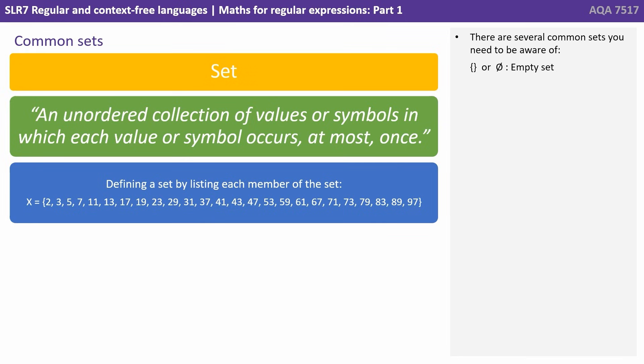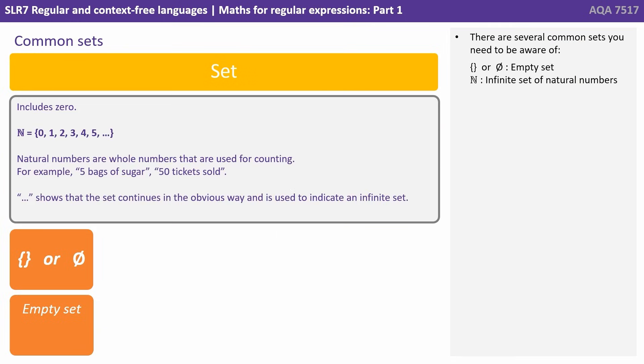There are several common sets you need to be aware of. These are the symbols we use to represent an empty set. This capital letter N is used to represent the infinite set of natural numbers, and that includes zero. Natural numbers are whole numbers that are used for counting. For example, five bags of sugar, fifty tickets sold.